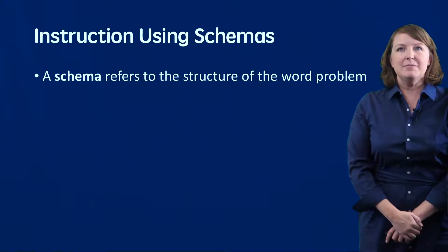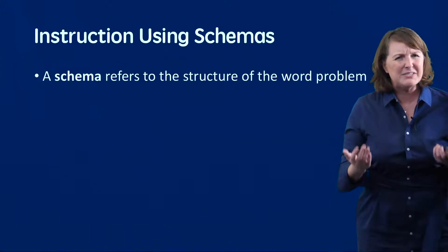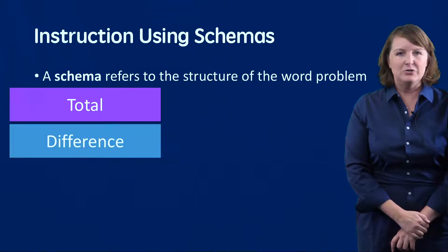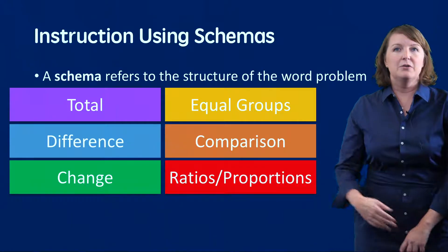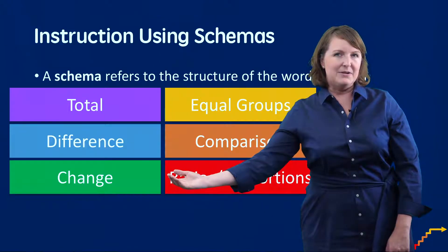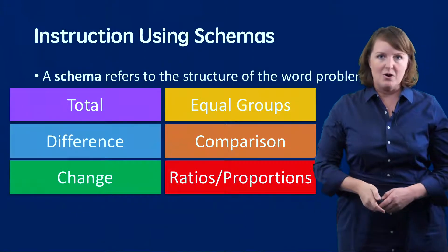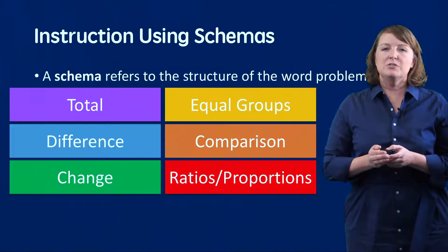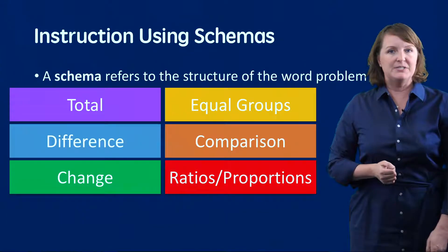When we think about a schema, a schema tells us what is the structure of the word problem — really, what's the meaning of this word problem? There are six schemas that we see regularly used across the elementary and middle school grades. We have total, difference, and change problems, which are additive schemas, and then we have equal groups, comparison, and ratios and proportions, which are our multiplicative schemas. We can use gestures to help students think about what type of schema is represented in a word problem. And now I'll show you some examples.